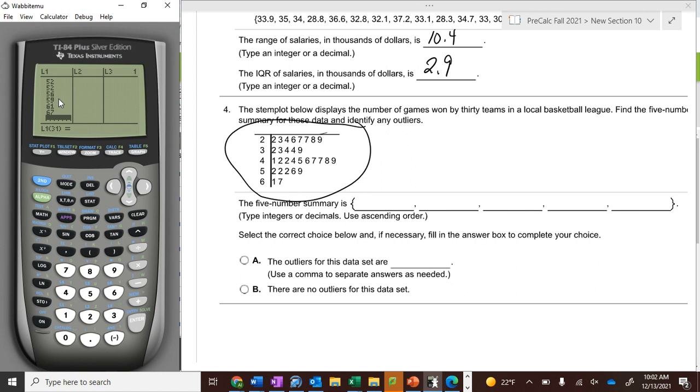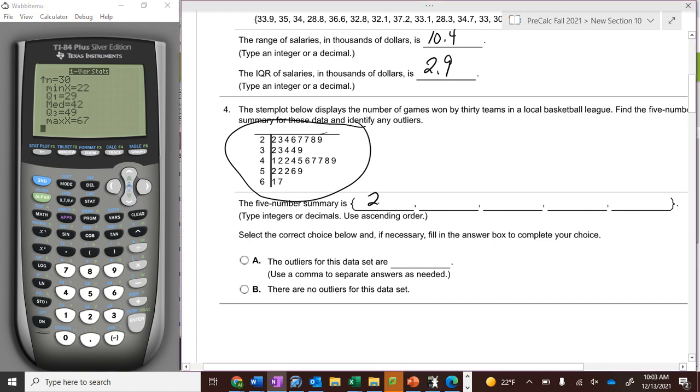So halfway in between the 15th and 16th should be my median. But if I just do stat, calc, one-variable statistics, it'll figure it out for me. If I arrow down, my minimum is 22, my first quartile is 29, my median is 42, my third quartile is 49, and my max is 67.